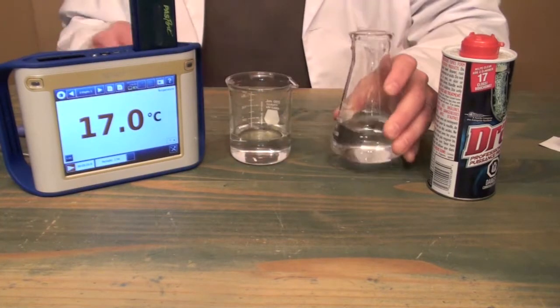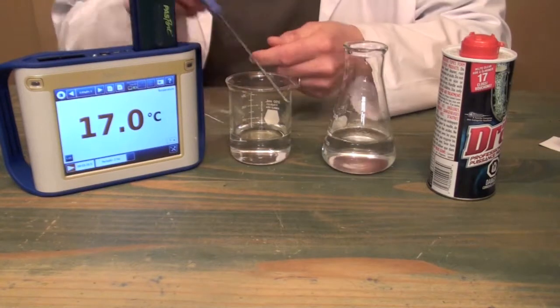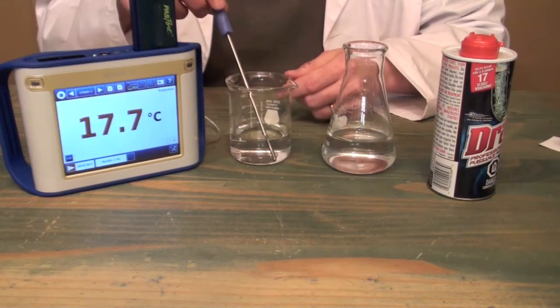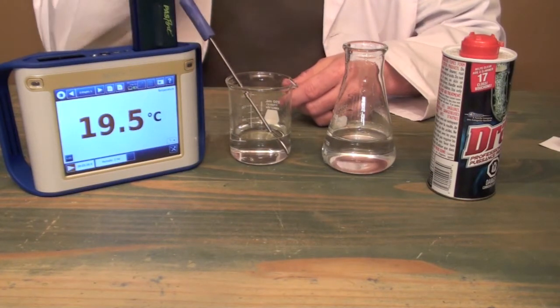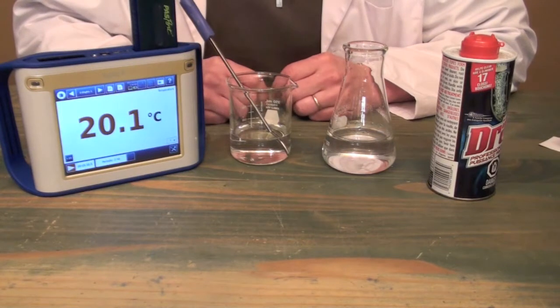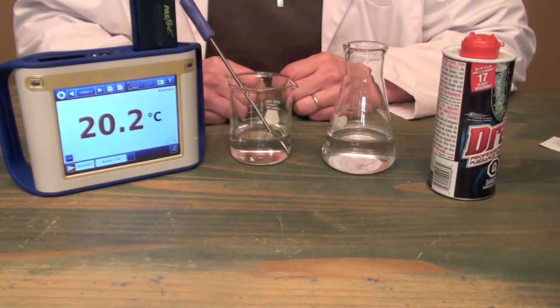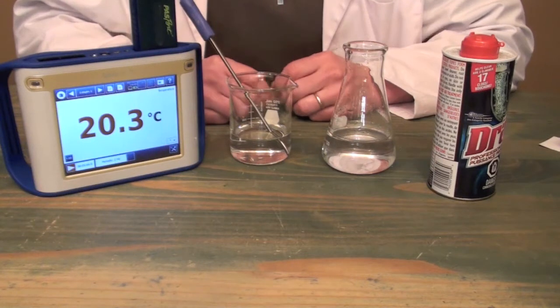And then we're going to place a temperature probe into the beaker to get our starting temperature. And we'll see that our starting temperature is around 20 degrees or so. So we'll just let that settle for a second. Looks like we've got about 20.3 degrees.